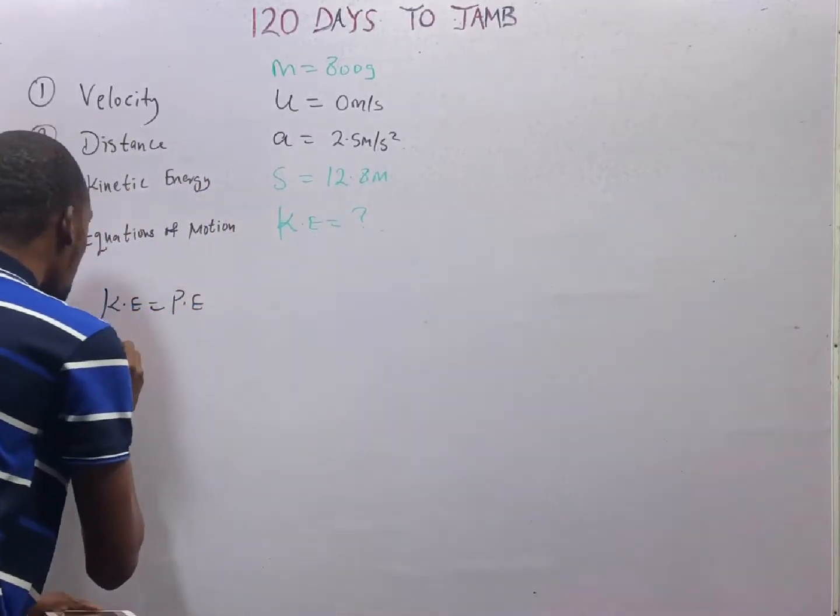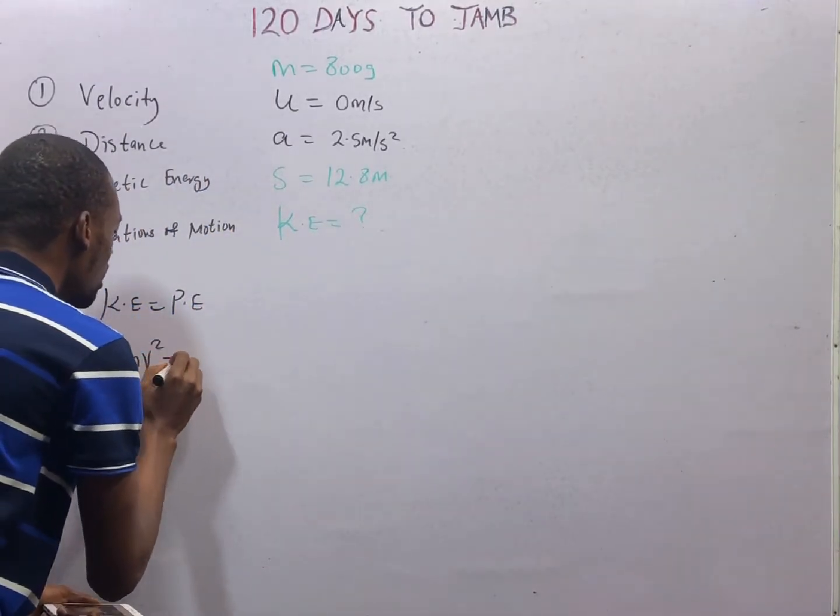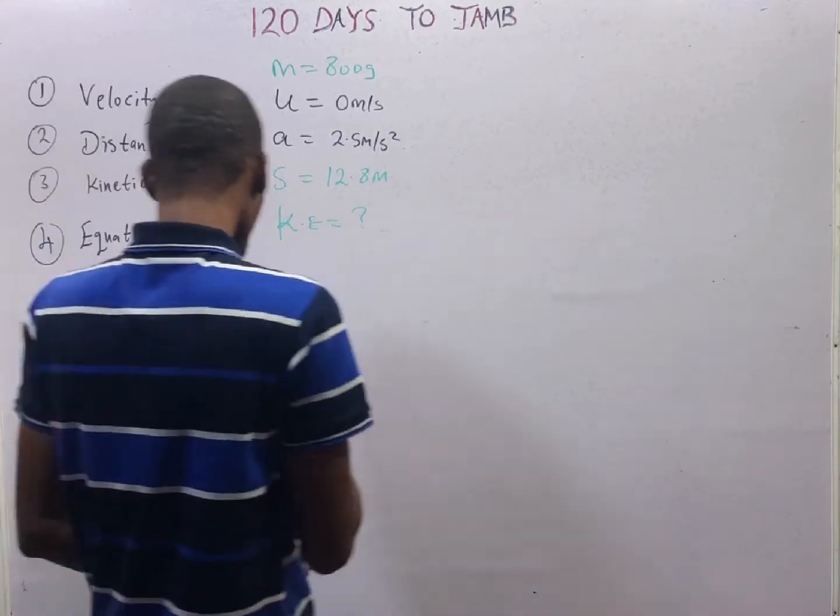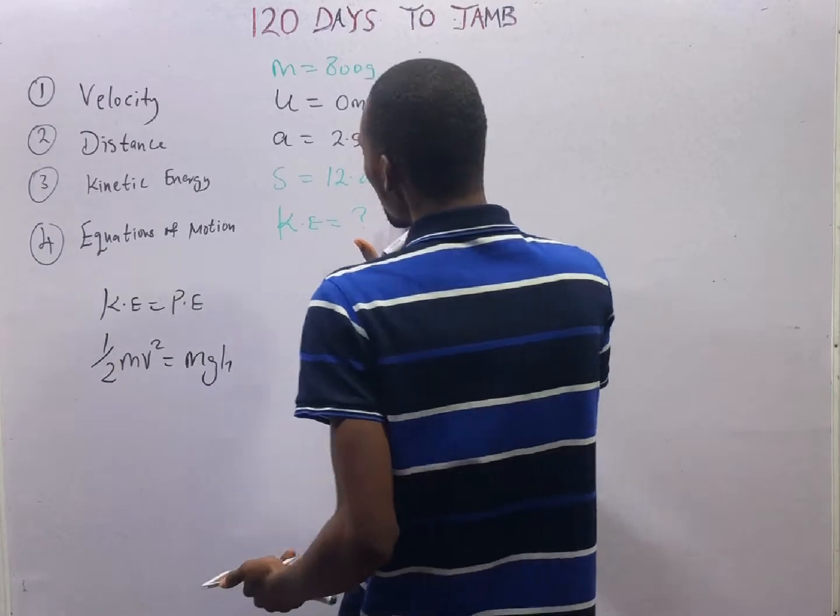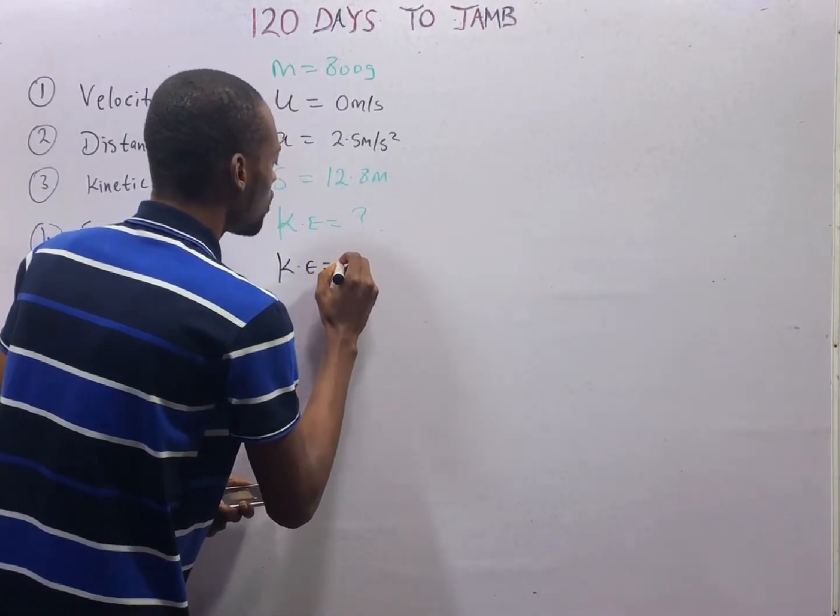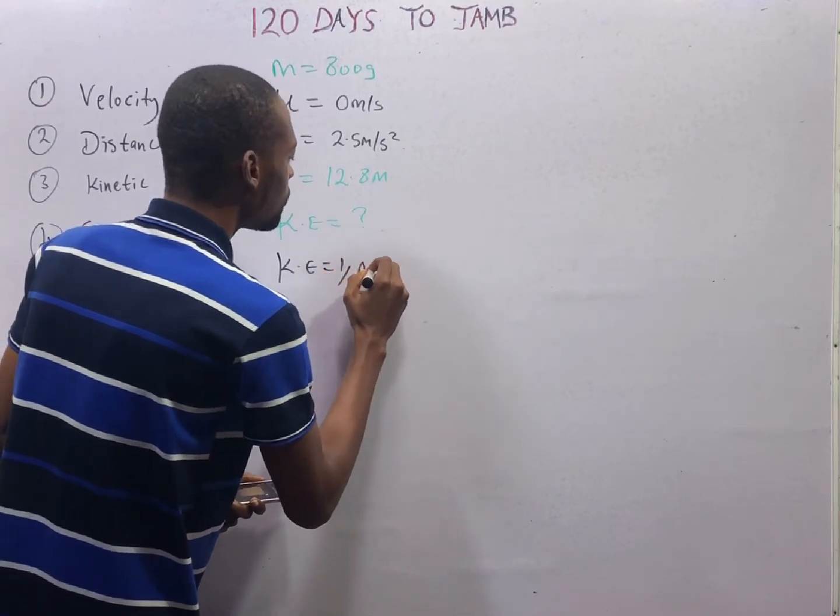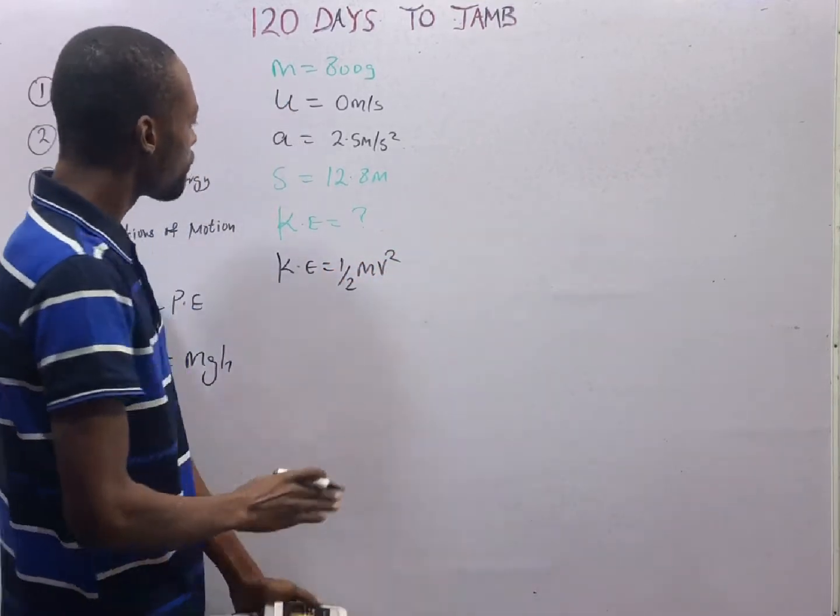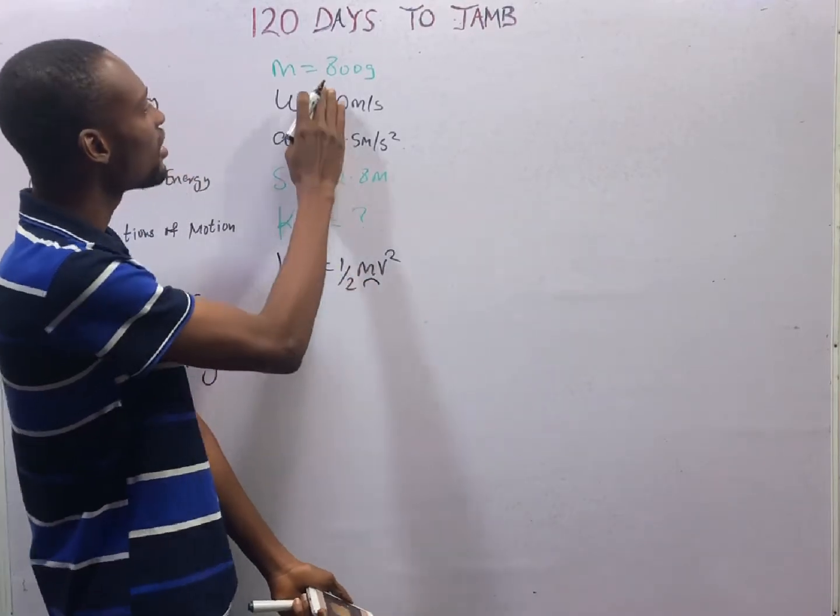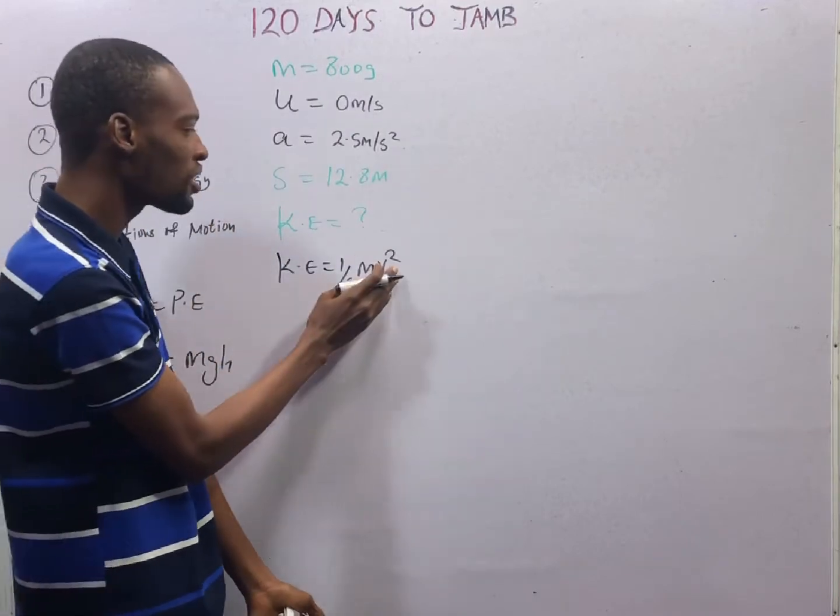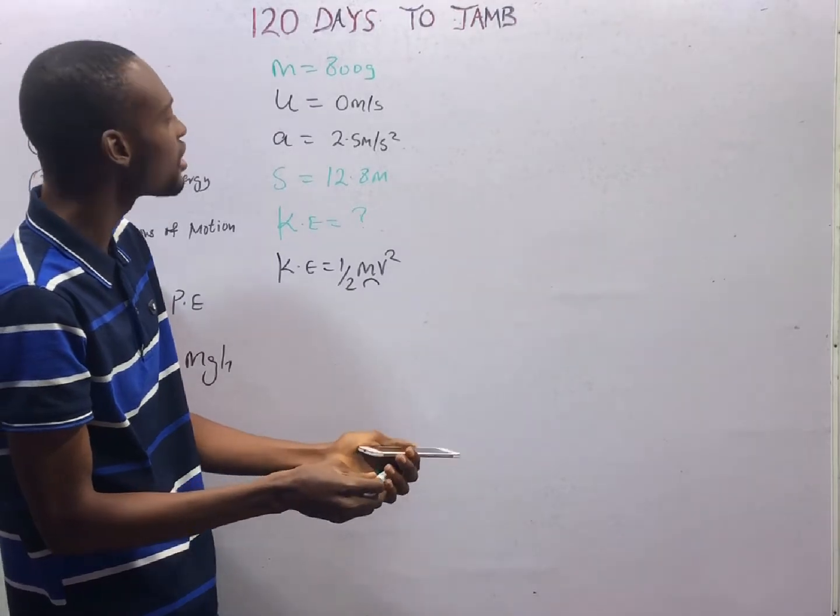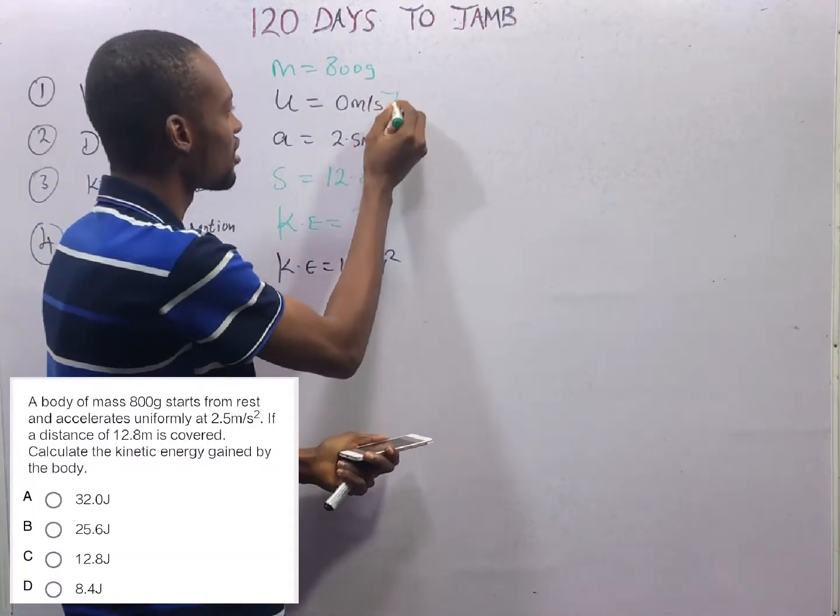Kinetic energy is KE = ½mv². From this formula, we have mass 800 grams. We don't have velocity, which implies that we need to find velocity from these other values given.